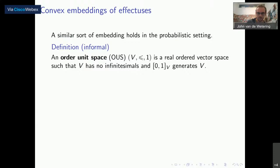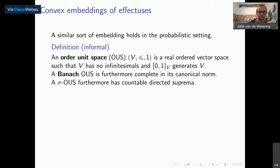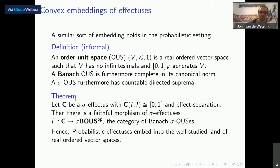A bit more technical: we can also embed a sigma-effectus where the scalars are probabilities into something called order unit spaces — well-behaved real vector spaces with properties related to the norm. It turns out if you have a sigma-effectus where the scalars are probabilities and you have effect separation, you can embed the sigma-effectus into these banal order unit spaces, which is a very GPT-like category — basically GPTs in infinite dimension. So we just get back GPTs out of these categorical considerations.